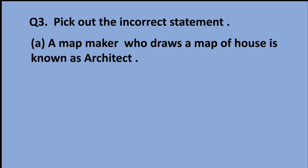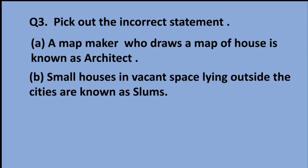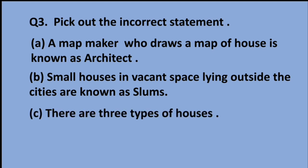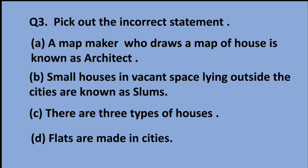Our next question is: pick out the incorrect statement. Option A: a map maker who draws a map of a house is known as an architect. Option B: small houses in vacant spaces outside cities are known as slums. Option C: there are three types of houses. Option D: flats are made in cities. The incorrect statement is option C, as there are many types of houses.